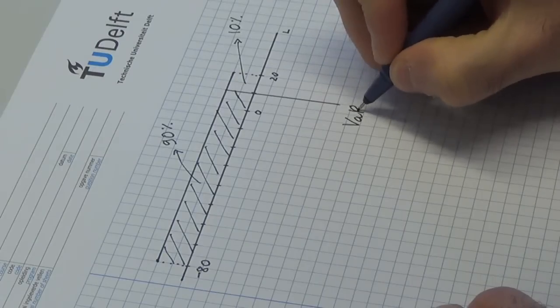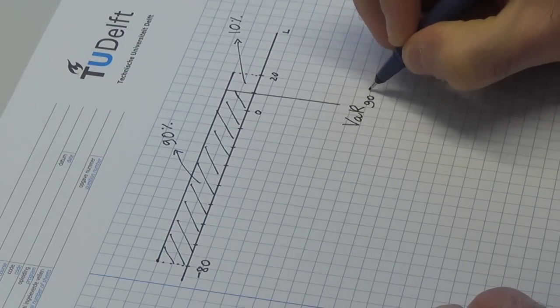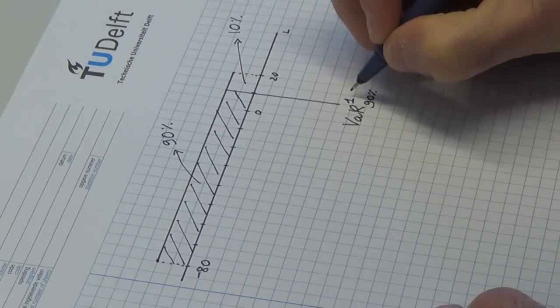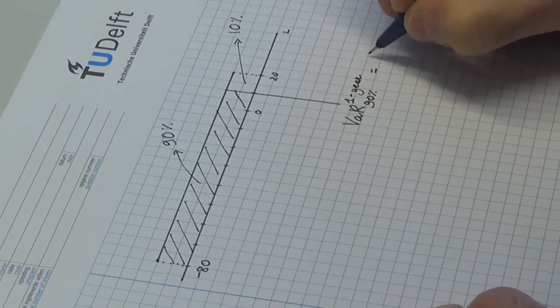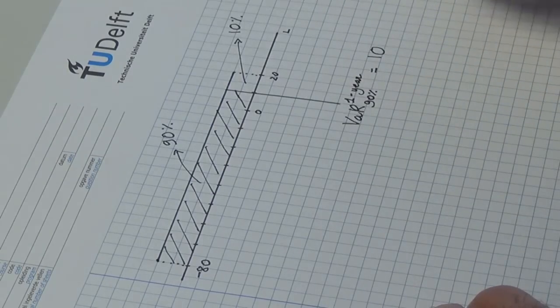Clearly, given the uniform distribution of losses between minus 80 and plus 20 million, this quantity is 10 million euros. Can you see this?